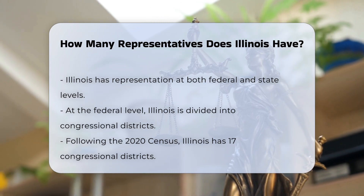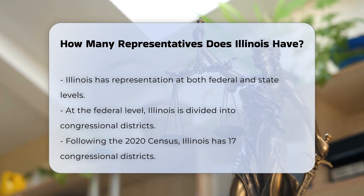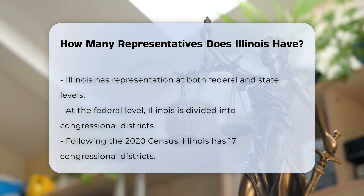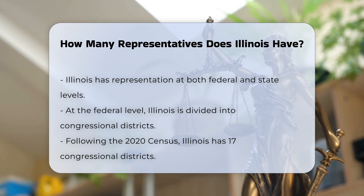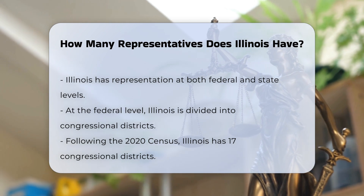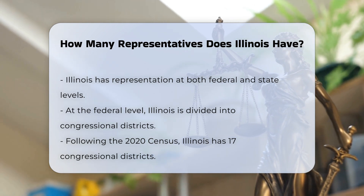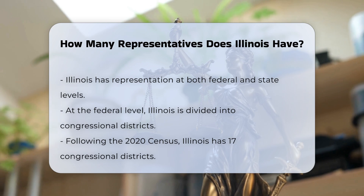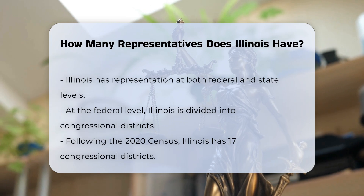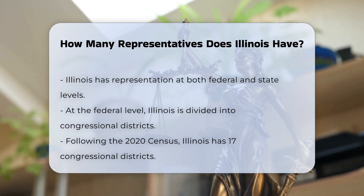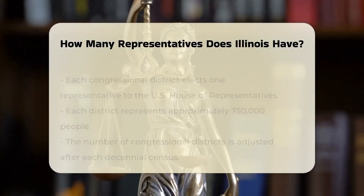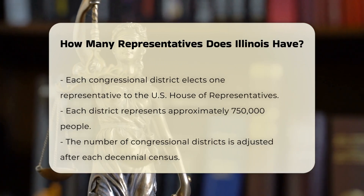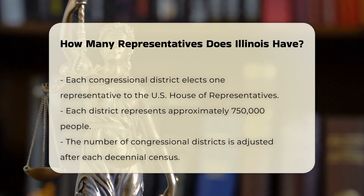At the federal level, Illinois is divided into congressional districts, each of which elects a representative to the U.S. House of Representatives. Following the 2020 census, Illinois underwent redistricting, which is the process of redrawing congressional districts based on population changes. As a result of this process, Illinois now has 17 congressional districts.